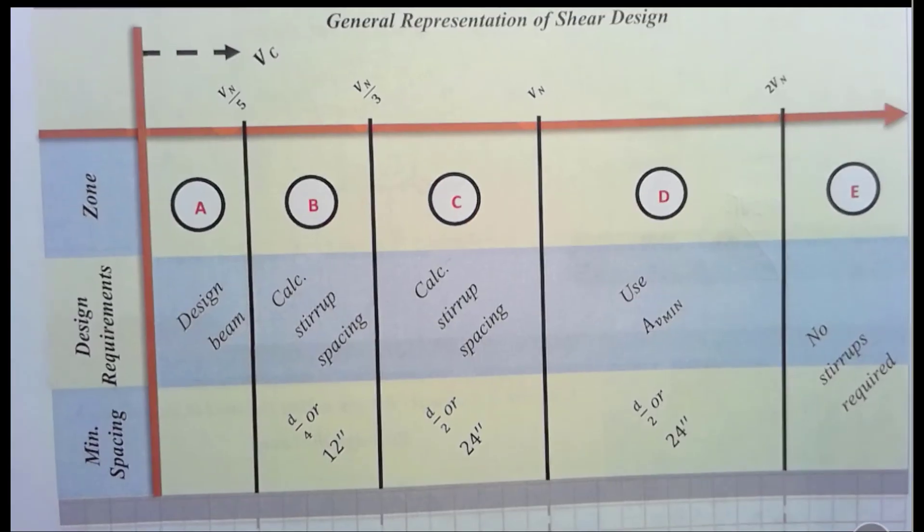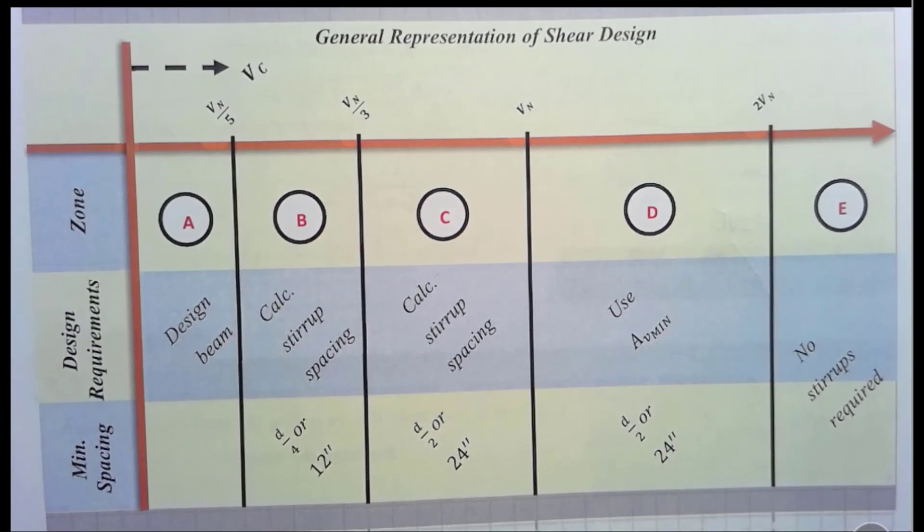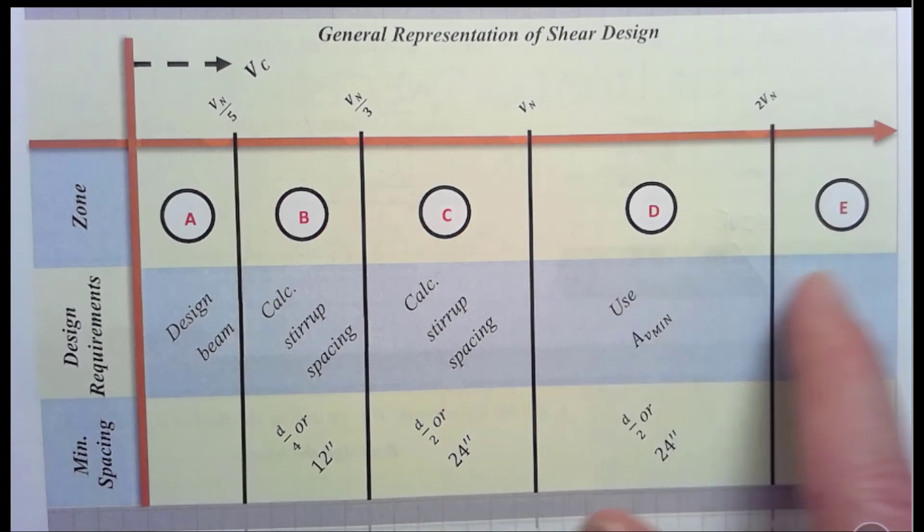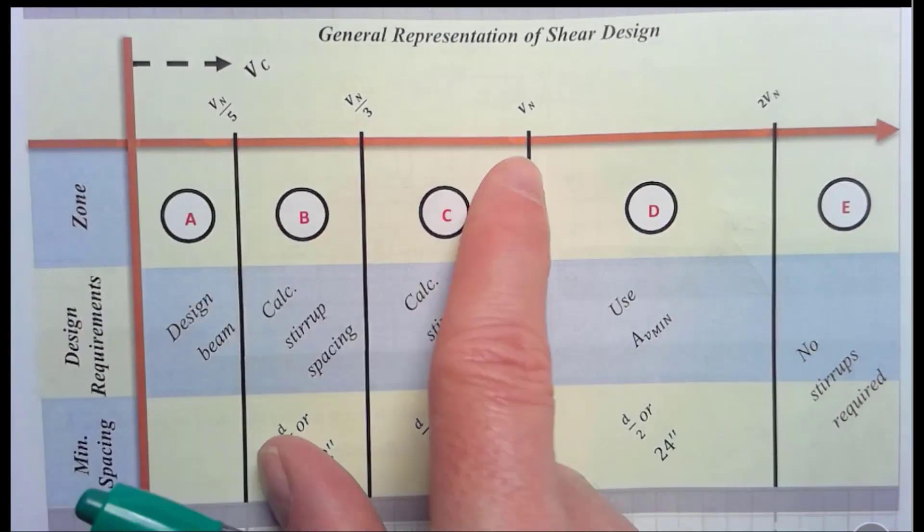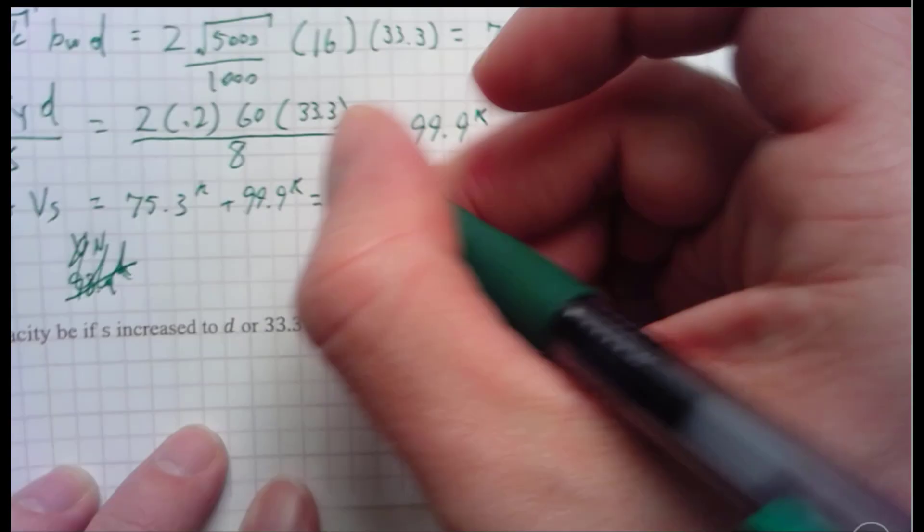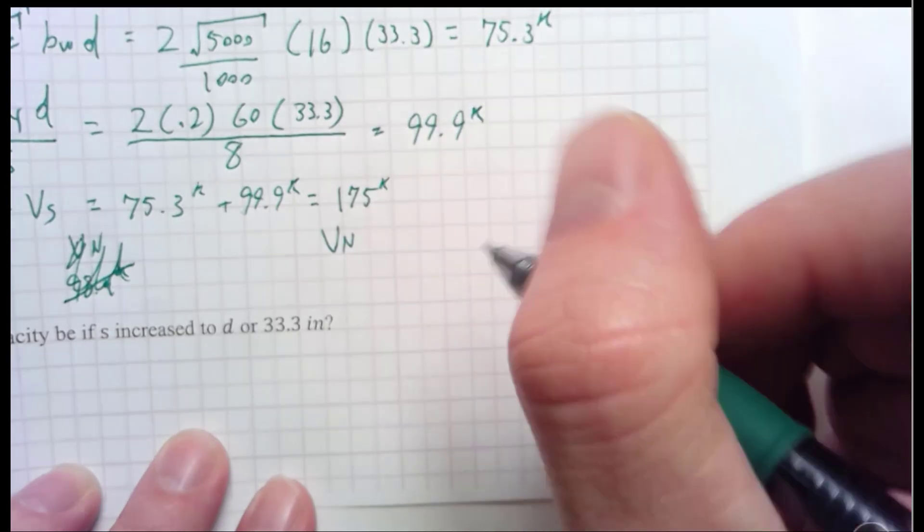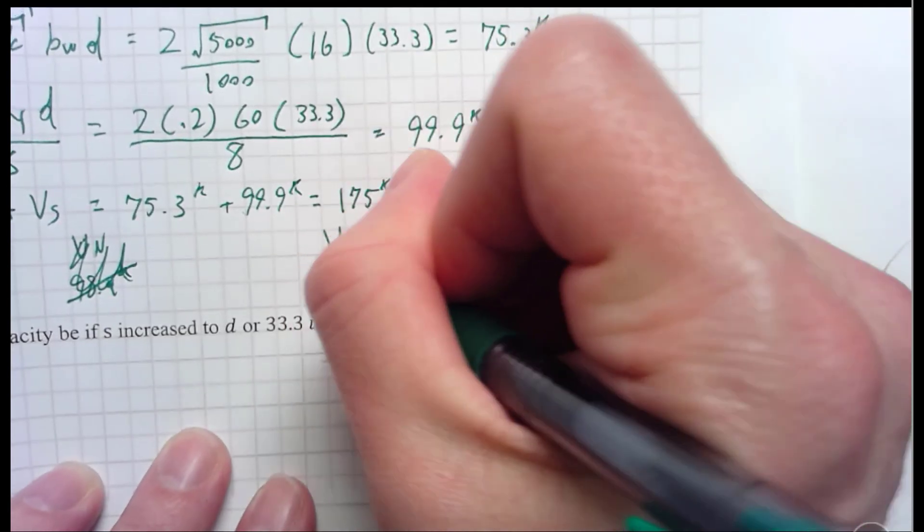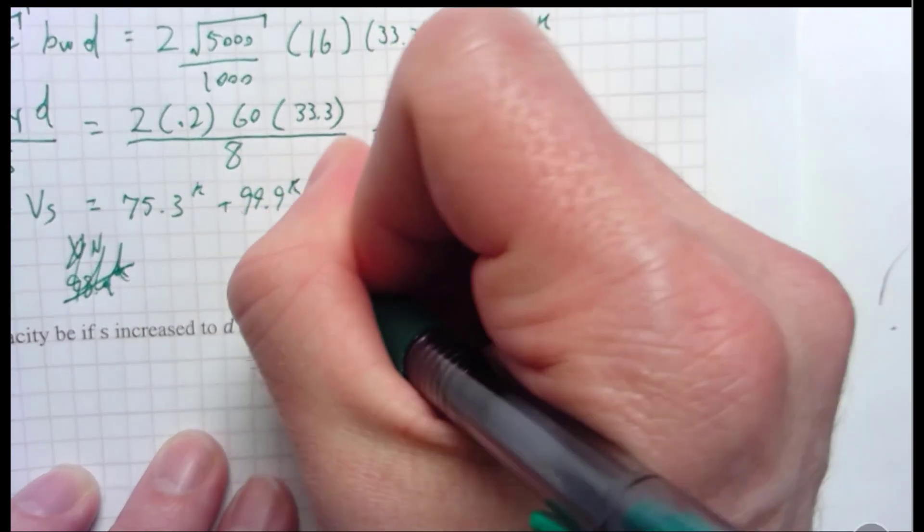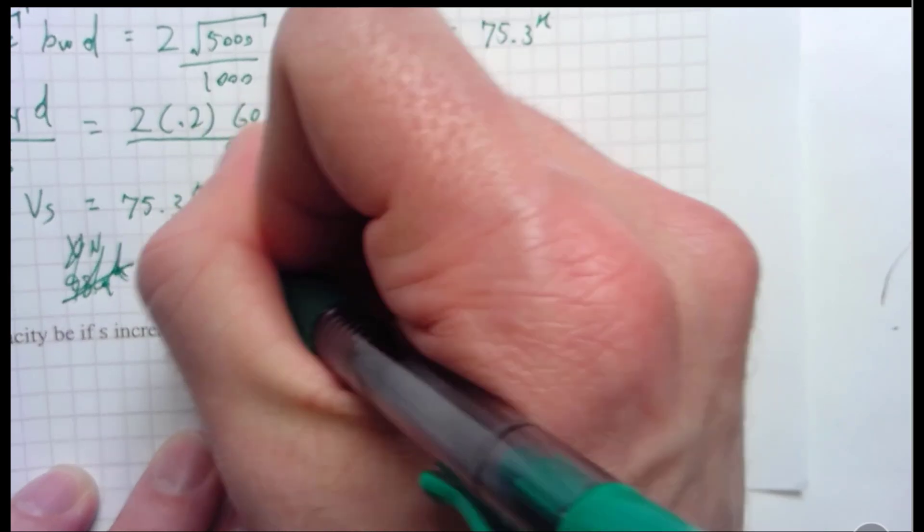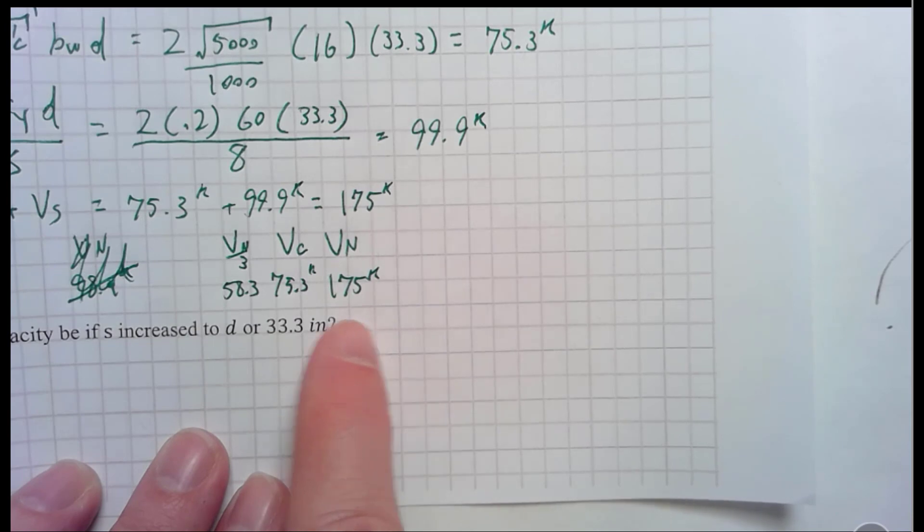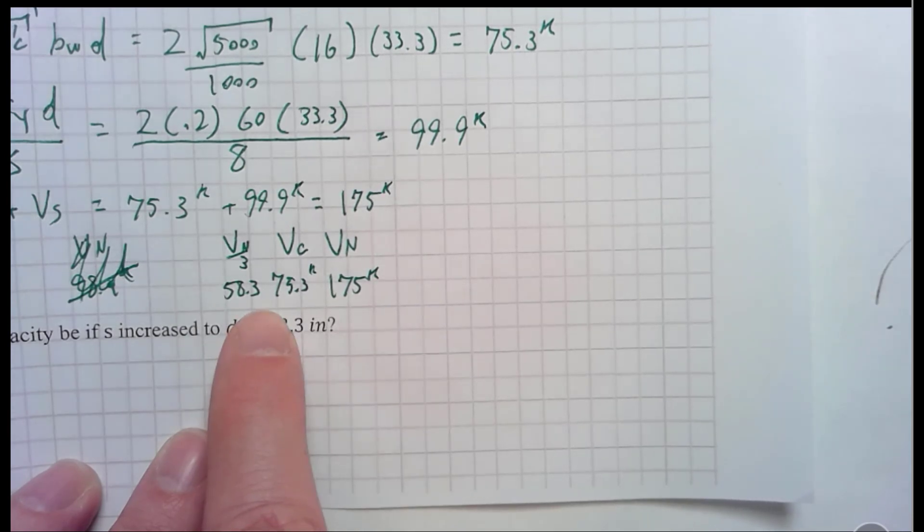Check this out. You should see this. We've talked about this in previous videos. You have to figure out if you're in zone A, B, C, D, or E. And that's all about comparing your V sub C to your V sub N. Again, check previous videos if you don't know what I'm talking about. V sub N is 175 kips. V sub C is 75.3 kips. And then V sub N over 3 is 58.3. So shown out here, I have written the V sub N, the V sub C, and the V N over 3 for my problem.